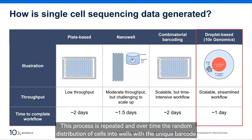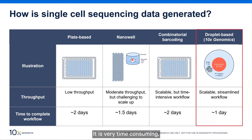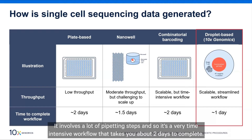This process is repeated, and over time the random distribution of cells into wells with unique barcodes means each cell acquires a unique combination of indices that can be used to identify its transcripts. However, it is very time consuming, involving a lot of pipetting steps, making it a time-intensive workflow that takes about two days to complete.